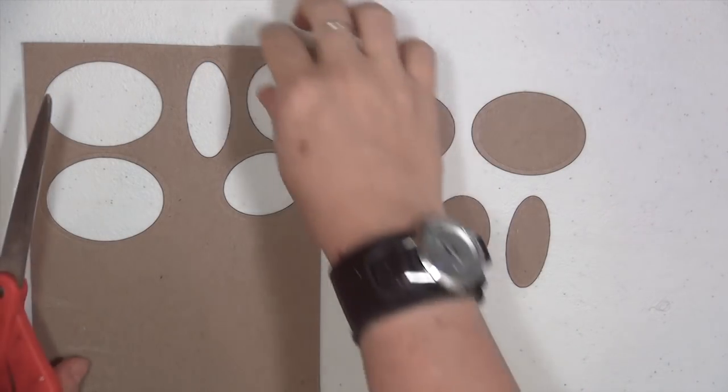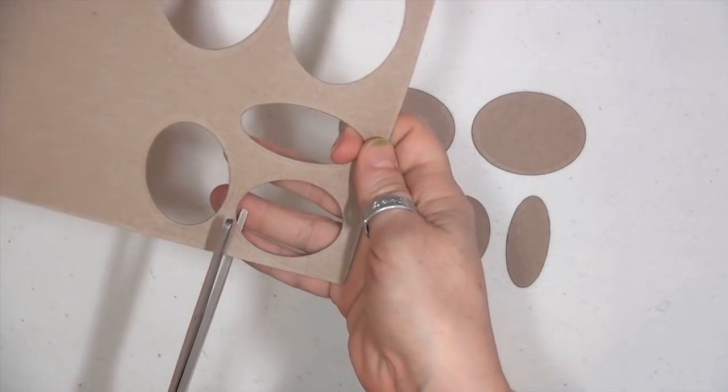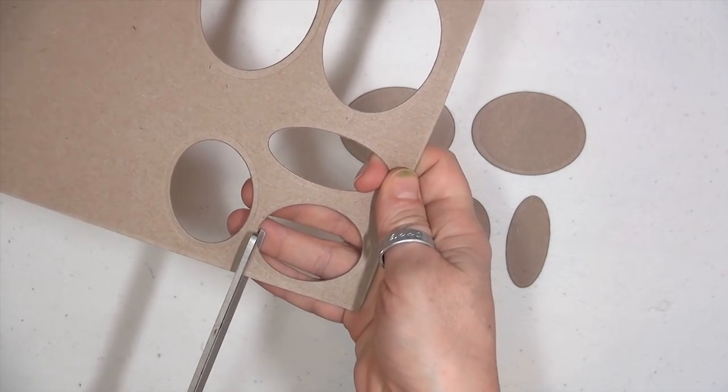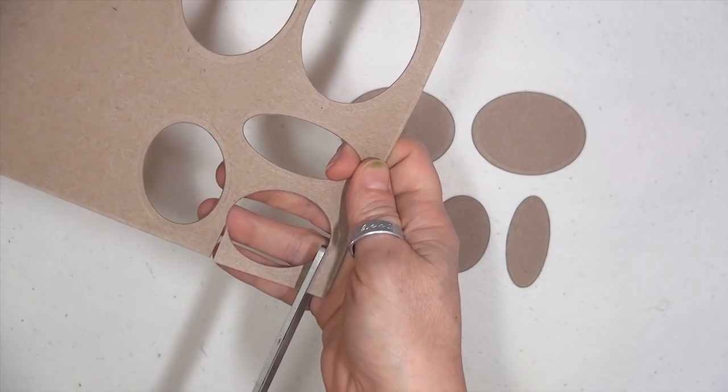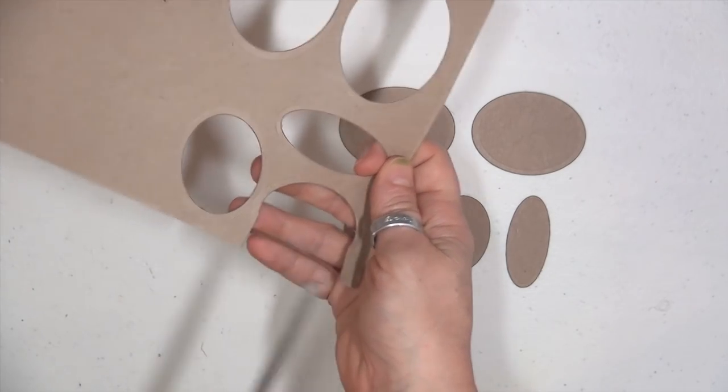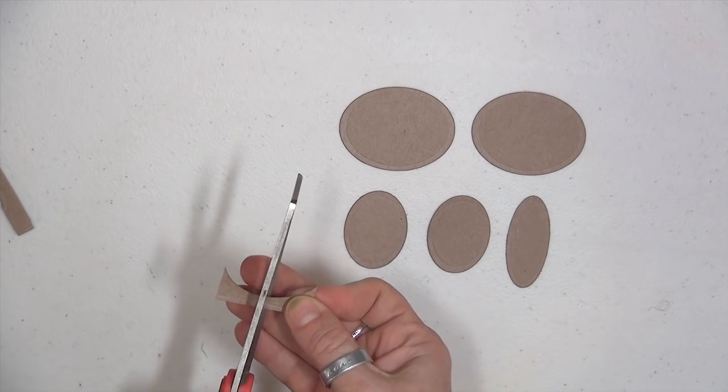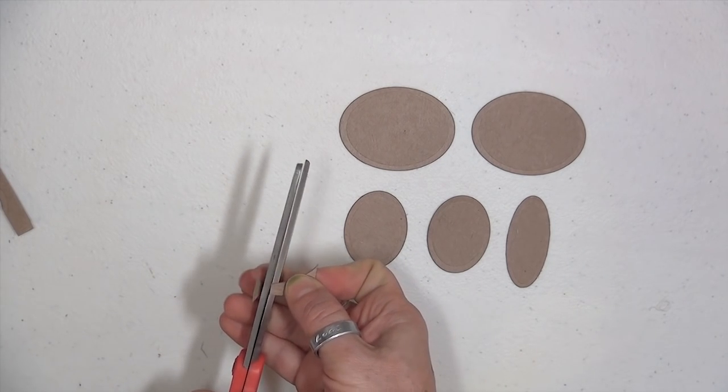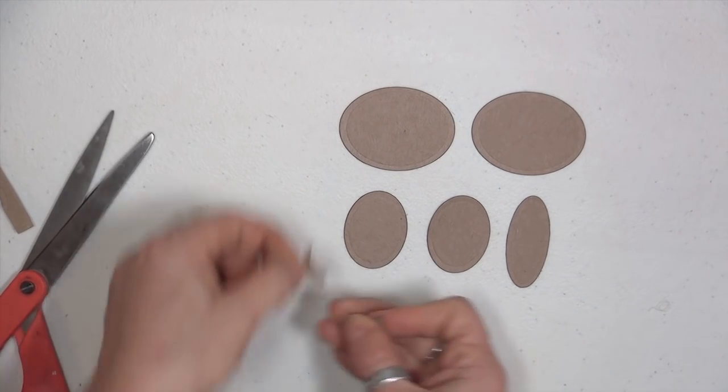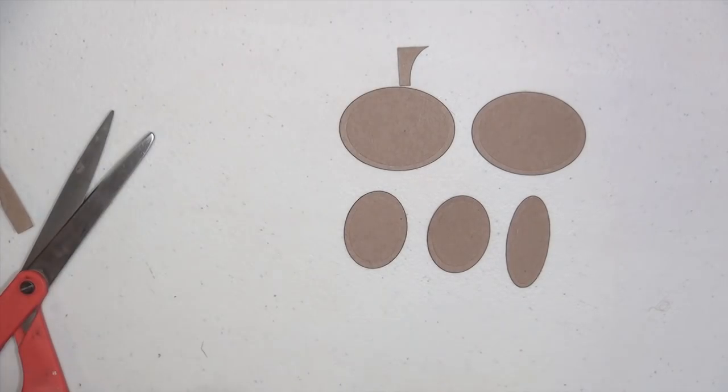We'll need a stem for the pumpkin, and I found that the edges of these ovals make a really great curve for the stem, so I'm just going to cut a little section here. Then I'll cut that piece in half, and that gives me two stems, so I have another one for next time, because it's really hard for me to make just one of these.